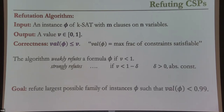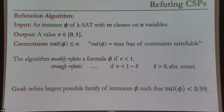The guarantee is that V is a correct upper bound on the maximum possible fraction of constraints that any assignment can satisfy. If V happens to be less than 1, then because of the correctness property of the algorithm, it has certified that the input formula is unsatisfiable — we call this weak refutation. Strong refutation means V is not just less than 1, but is bounded away from 1 by some fixed constant delta. From an approximation algorithms perspective, weak refutation proves every assignment must violate at least one constraint, while strong refutation proves every assignment must violate at least a constant delta fraction of the constraints.